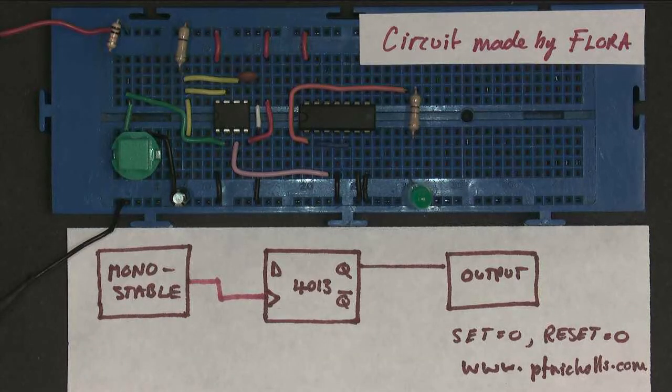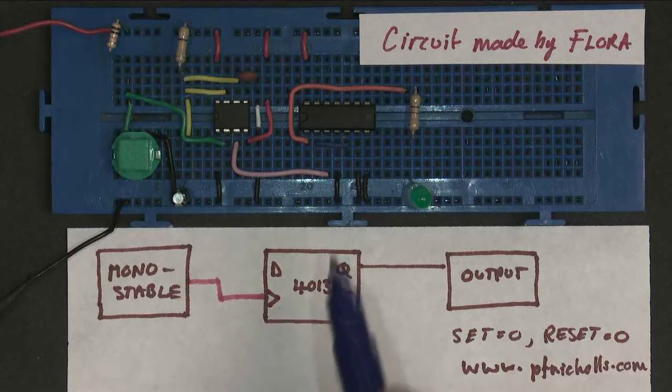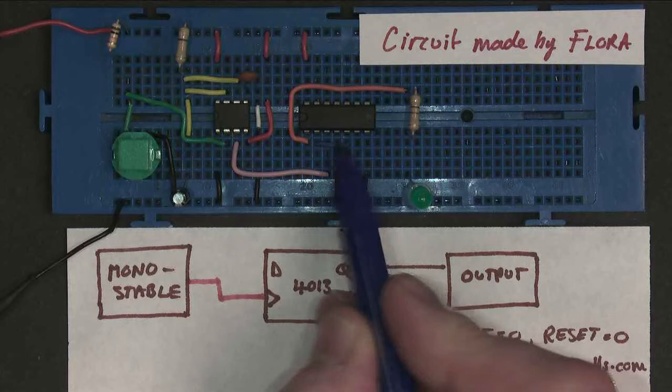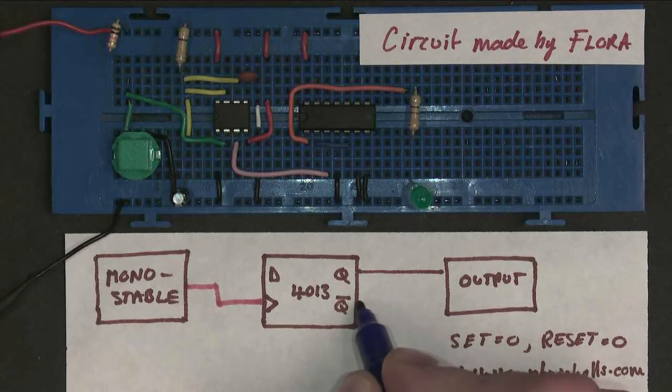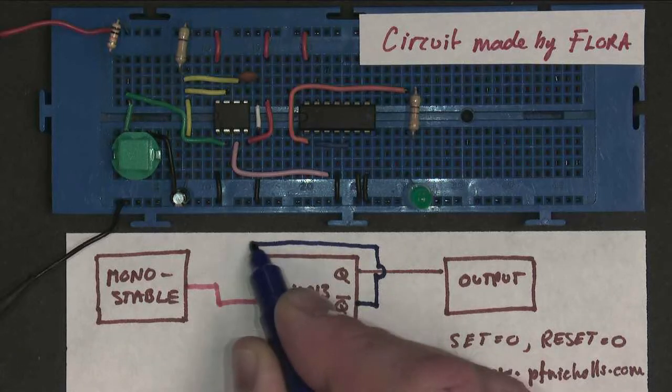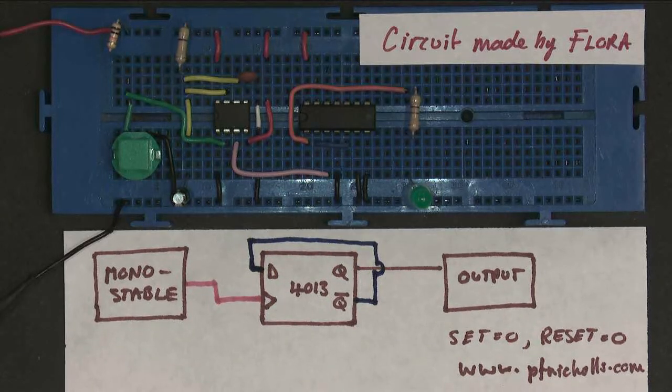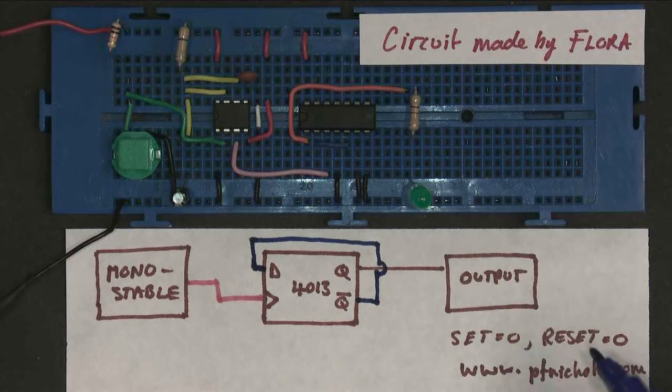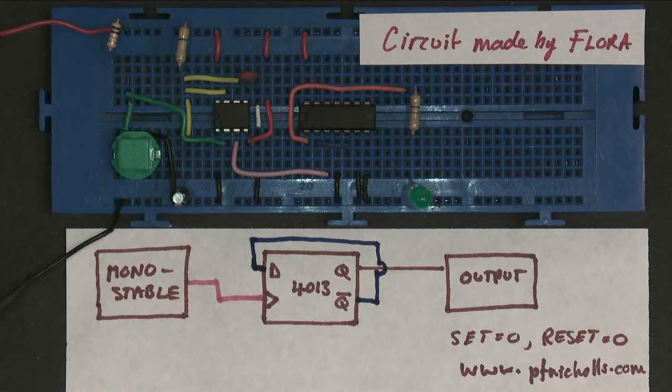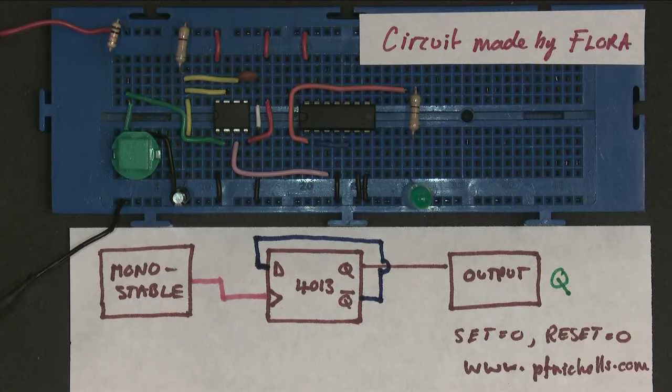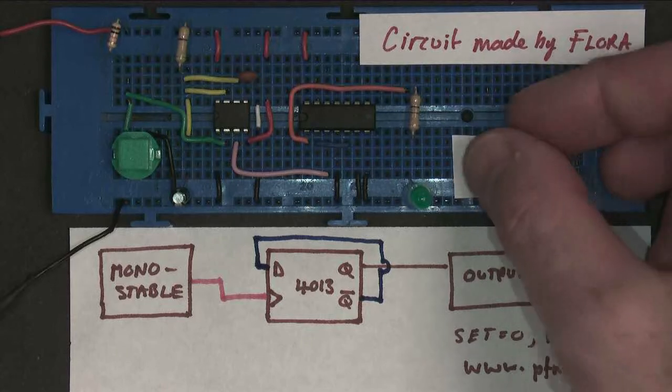But crucially for this circuit, I also have this blue wire here connecting the data and Q-bar. Now how does that look on a diagram? Well Q-bar links around and connects into the data, so that's the circuit that I have here. My output is this green LED just here representing Q, so what I need to do is just write that on to remind me, this is the output Q, and I can find a label to remind us like that.